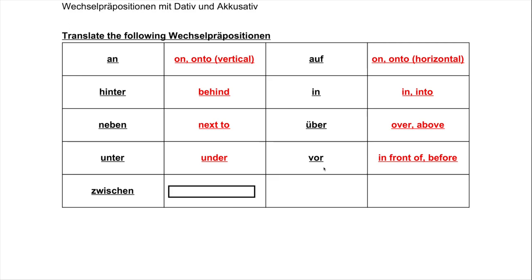Be careful, because 'vor' is used when you're standing in front of something like a building. But if you're standing in front of a window, you use 'an' — ich stehe am Fenster, I'm standing at the window. So be careful with 'an' and 'vor,' as they are slightly different. 'Zwischen' is the last one, which means 'between.' These Wechselpräpositionen are also known as prepositions of place because they explain where something is or where something is going. The full list is: an, auf, hinter, in, neben, über, unter, vor, and zwischen.